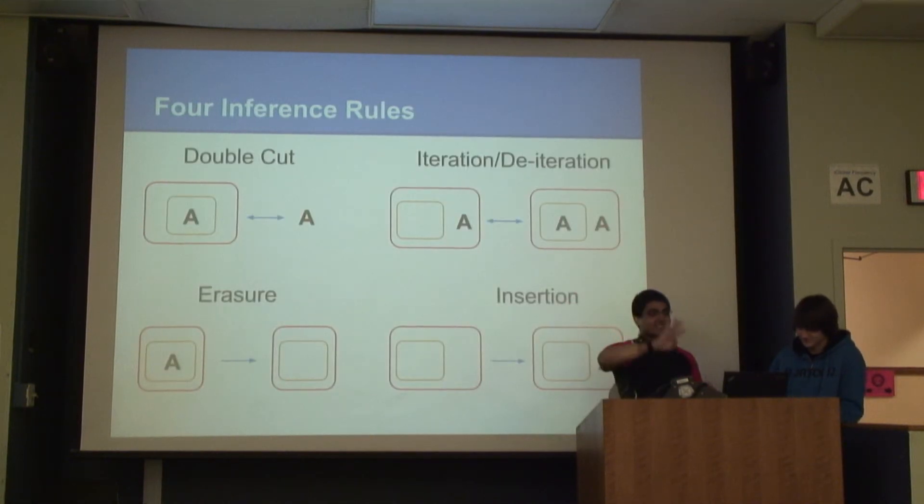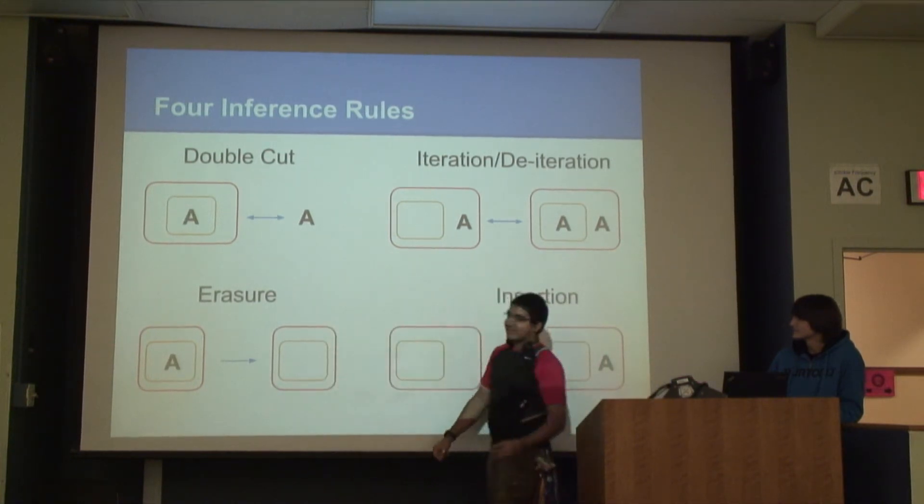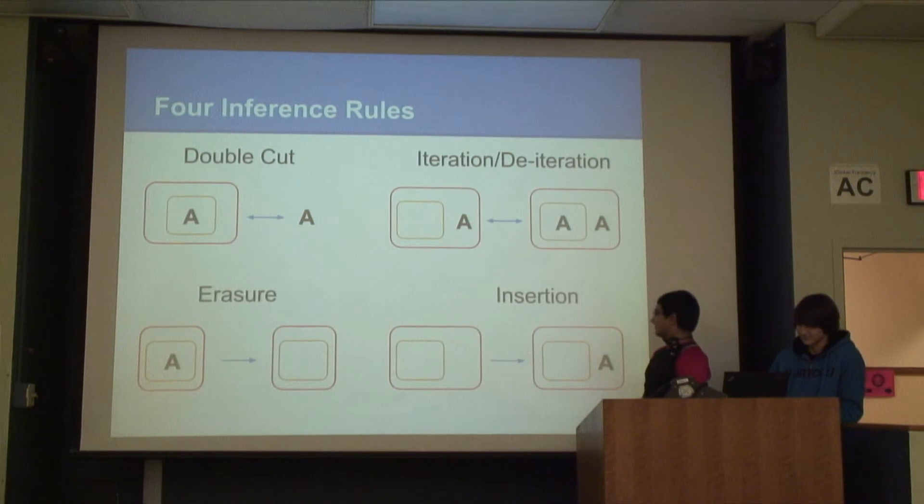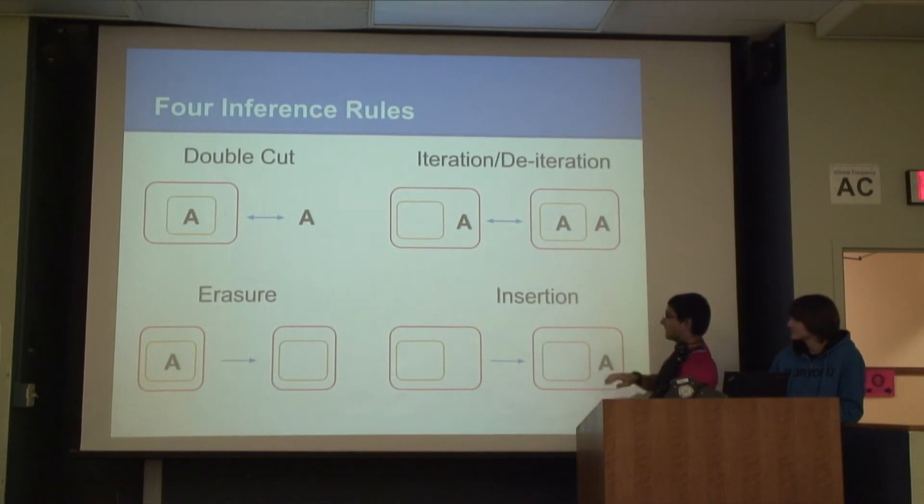So we have four inference rules. It's really easy. So double cut. You can just put two cuts around something or take it off. Iteration and de-iteration. If something is on a lower level, you can bring it forward or take it out. And erasure, anything on an even level, and level determined by how many cuts around it. You can just erase it. And insertion, you can go from any odd level and put anything you want inside of it.